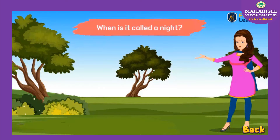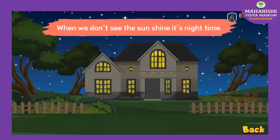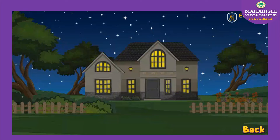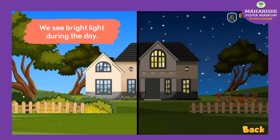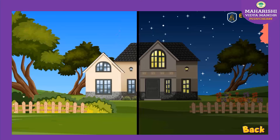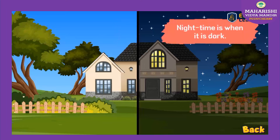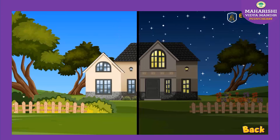When is it called a night? When we don't see the sunshine, it is night time. We see bright light during the day. Night time is when it is dark.